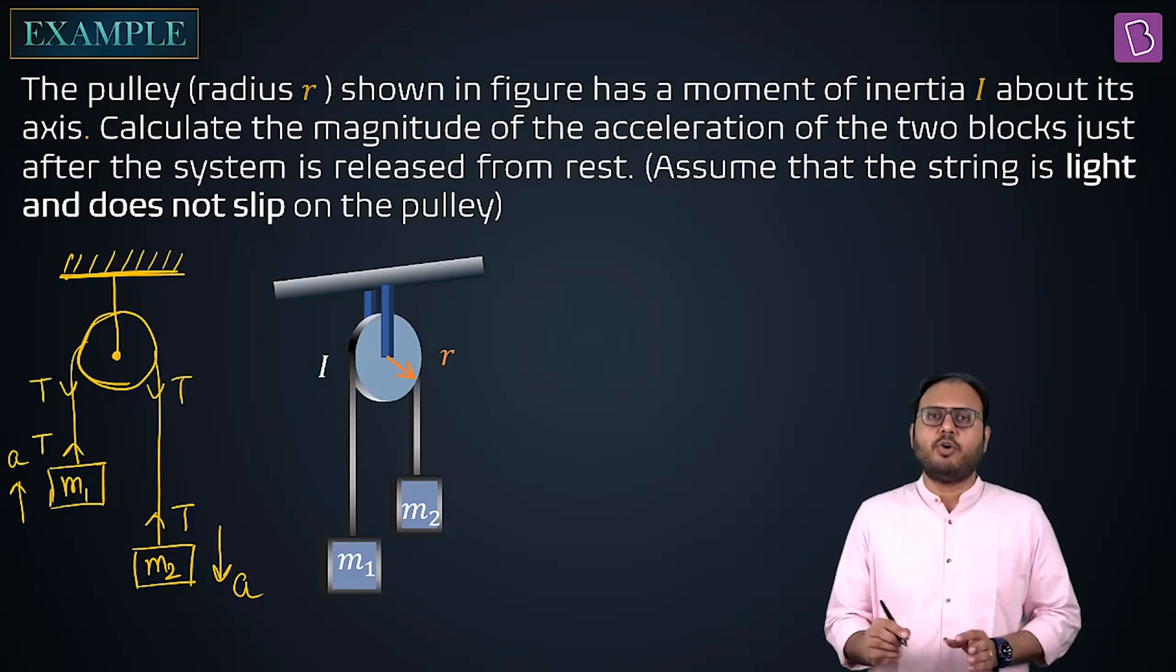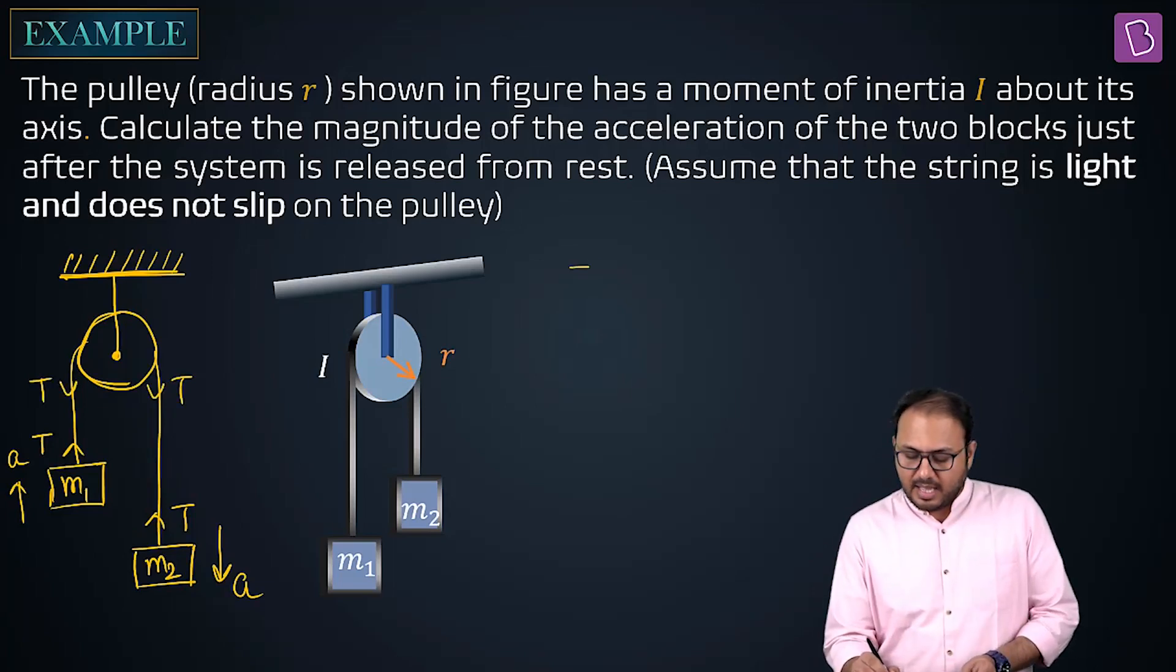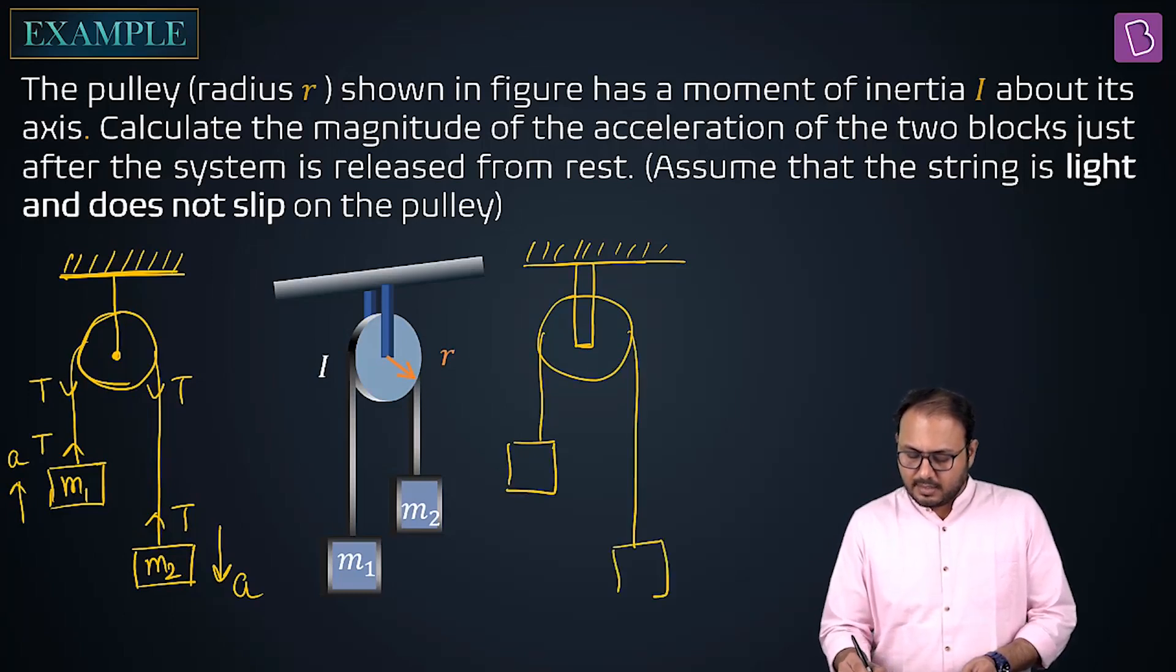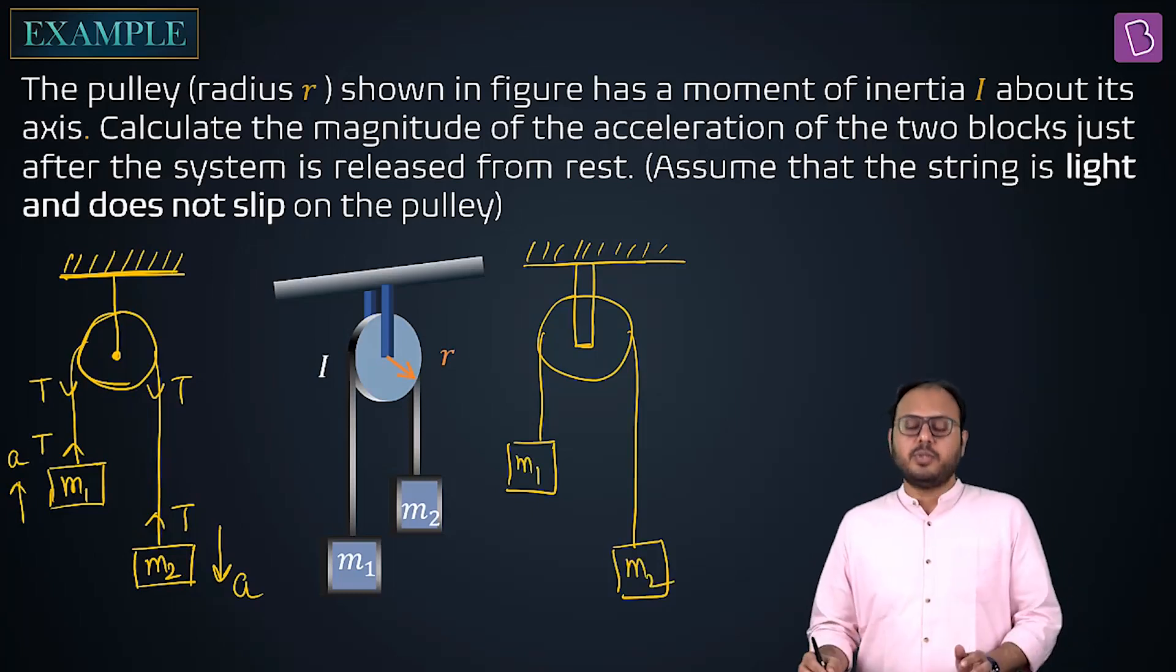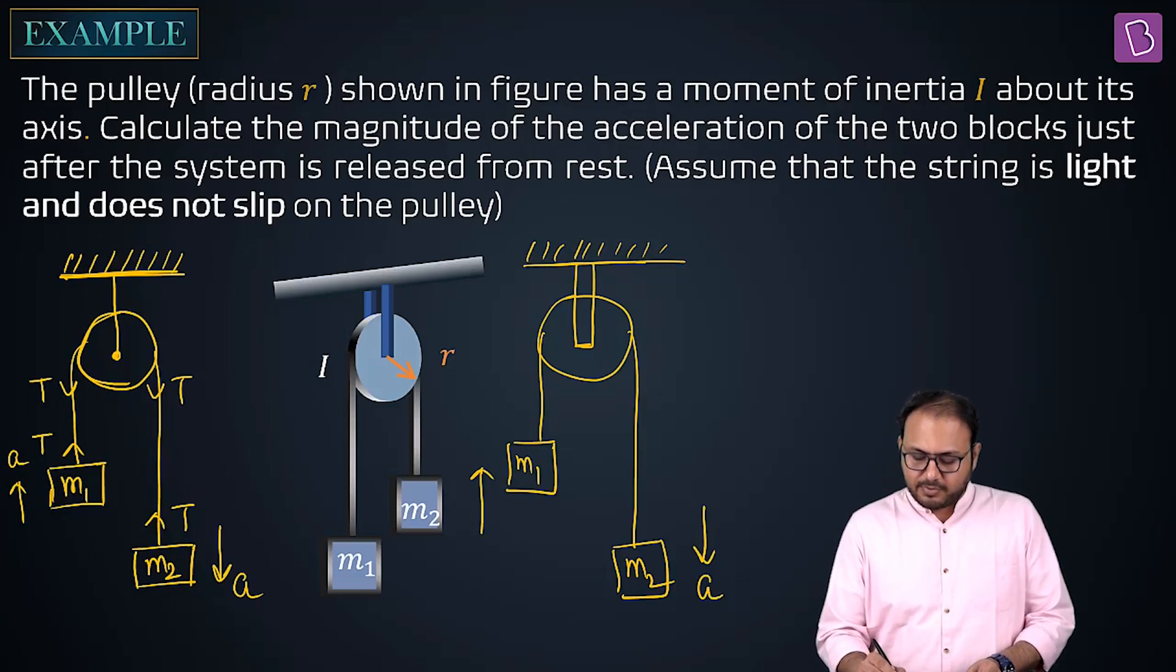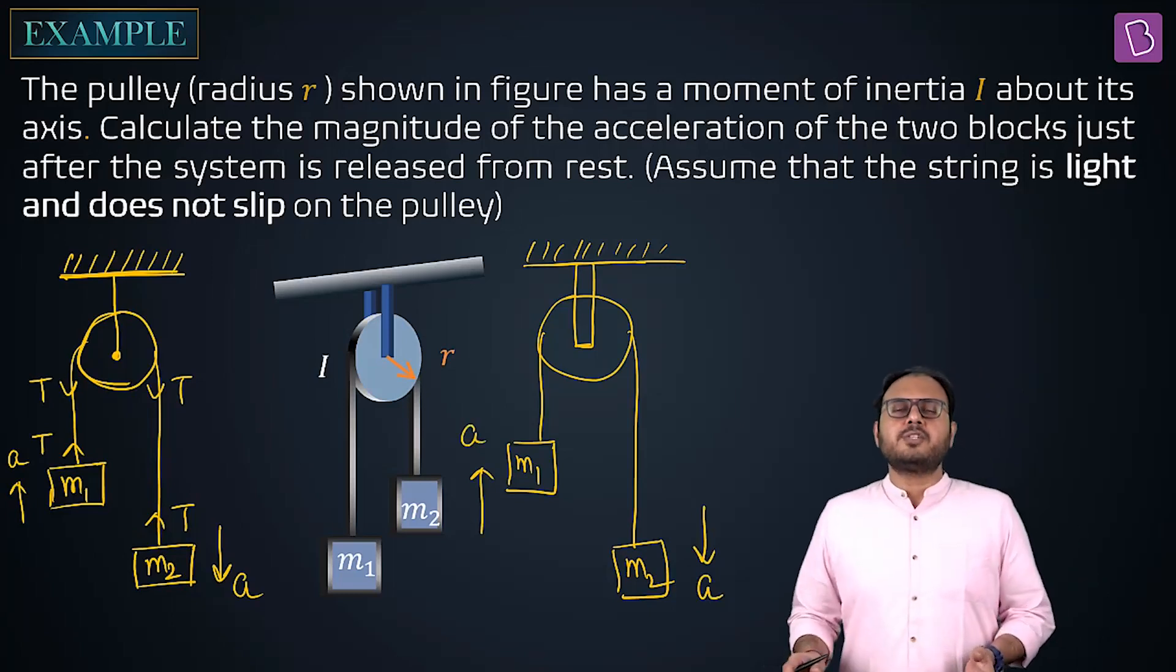What happens now? The problem with now is this: now the pulley still has an inertia. If it has an inertia, that's point number one. And point number two, the string is light and does not slip on the pulley. The moment you say that, this is the best part. First of all, what is the best part? Sir, constraint is more powerful than anything.